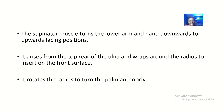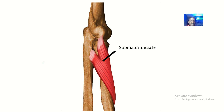To summarize: the supinator muscle attaches from the top rear of the ulna, wraps around the radius, and its function is to turn the palm and the arm to face anteriorly. That is the supinator muscle.